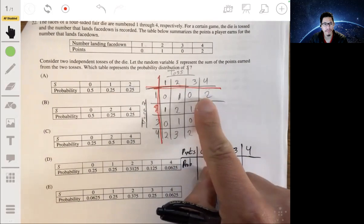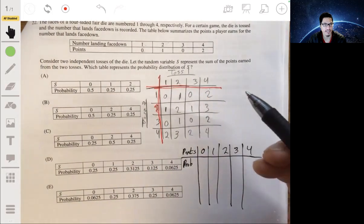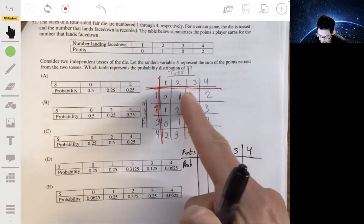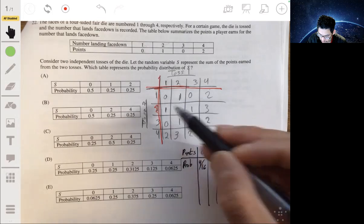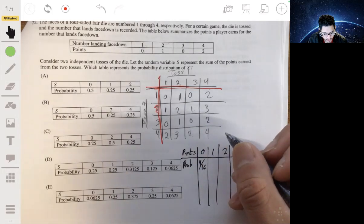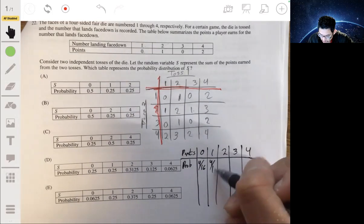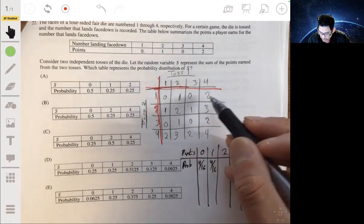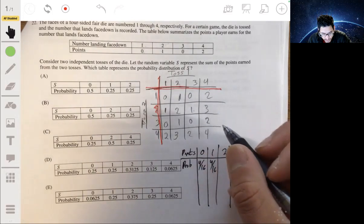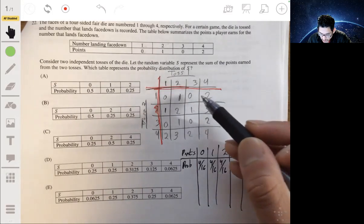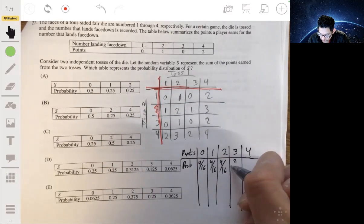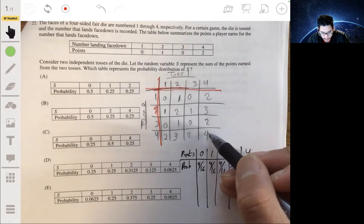Since there's 16 total, we can just add up how many there are out of 16. So there's 1, 2, 3, 4, 4 zeros out of 16. 1, 2, 3, 4, 4 ones. So 4 out of 16 there are 2. 1, 2, 3, 4 twos. So 4 out of 16 there as well. So 3's, we got just 2, 3's, so 2 out of 16. And the 4's, we got just 1.